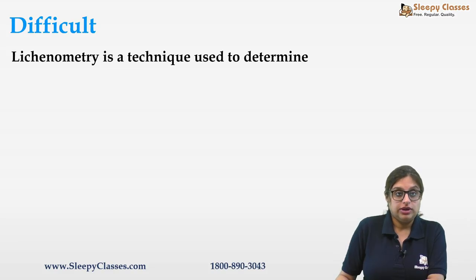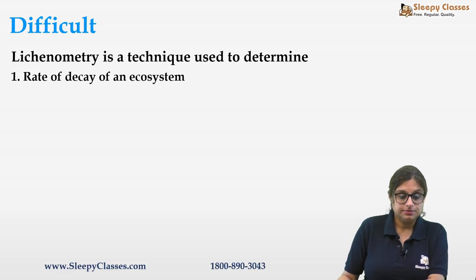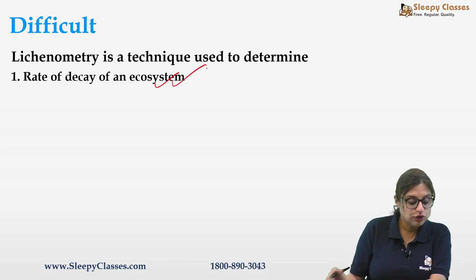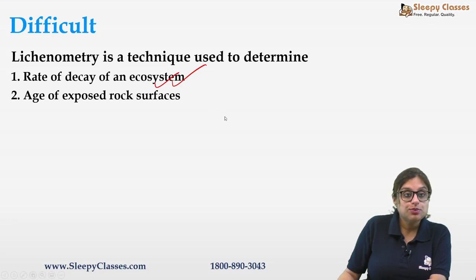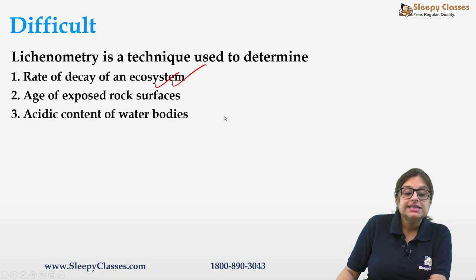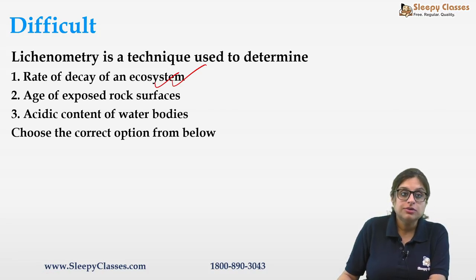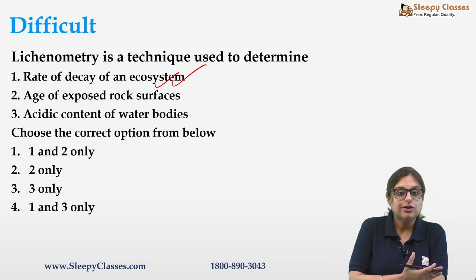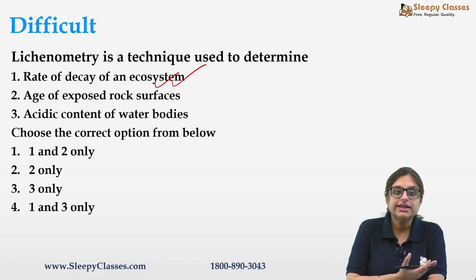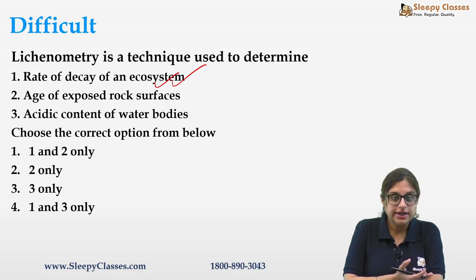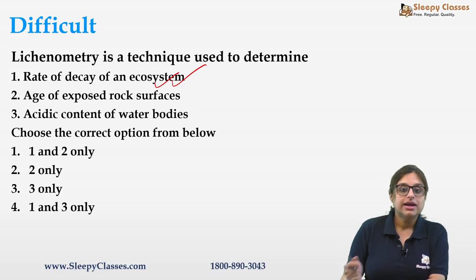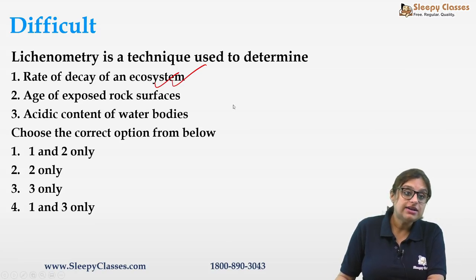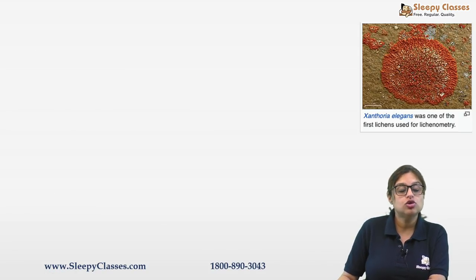Next question is about lichenometry — a technique used to determine: (a) rate of decay of an ecosystem, (b) age of exposed rock surfaces, or (c) acidic content of water bodies. The correct answer is age of exposed rock surfaces. Since lichens can survive for many years, by measuring their diameter, we can estimate the age of rocks they grow on. That process is known as lichenometry.